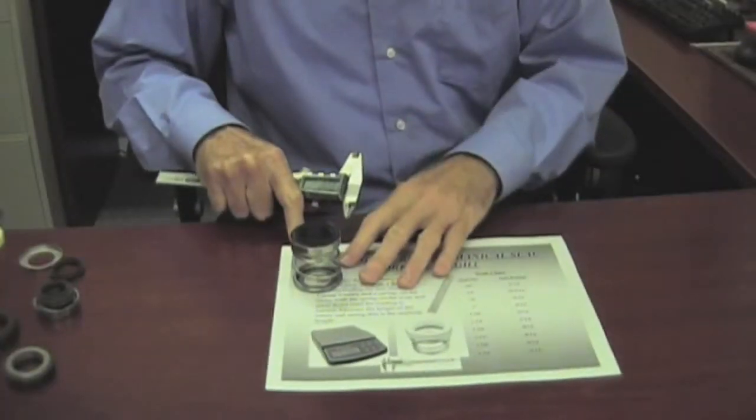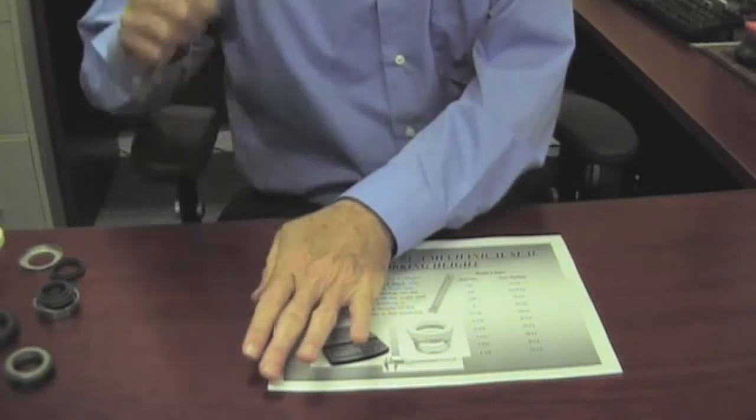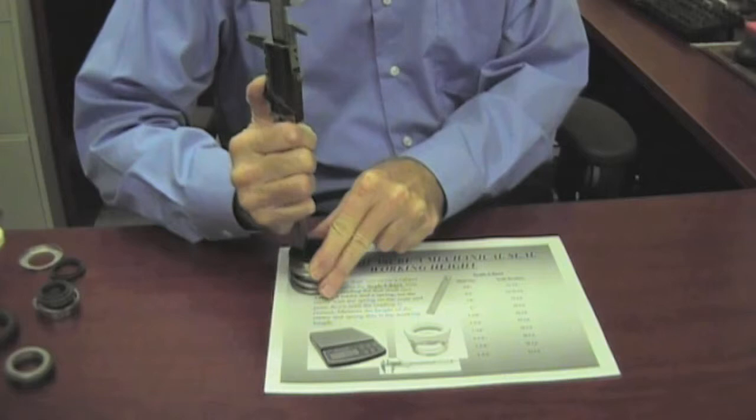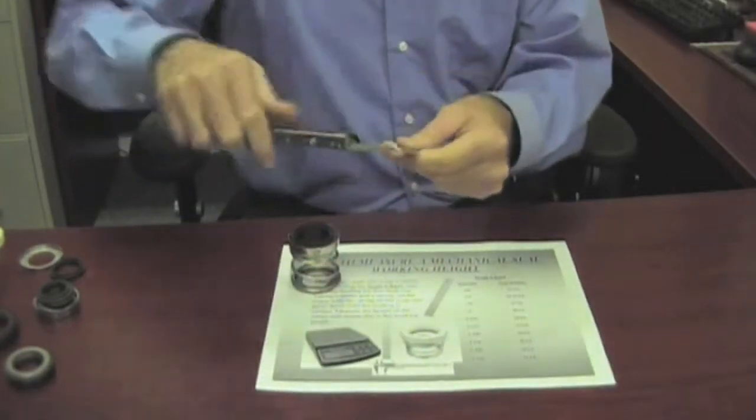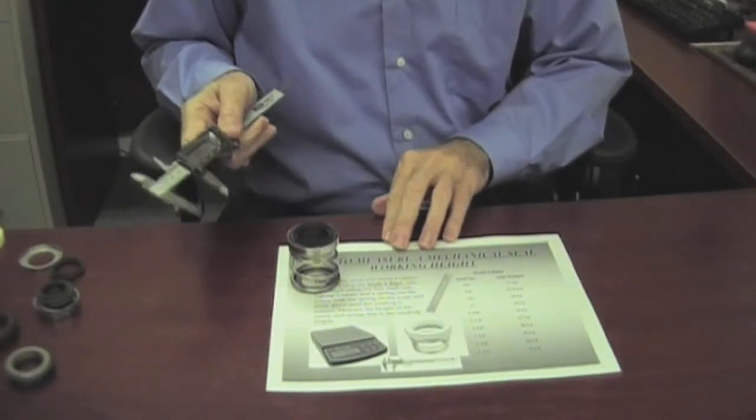So imagine this to be a scale. I am going to push this seal down until we get to about 24 pounds, and then I am going to take the measurement on it, and that is going to be what the working length is.